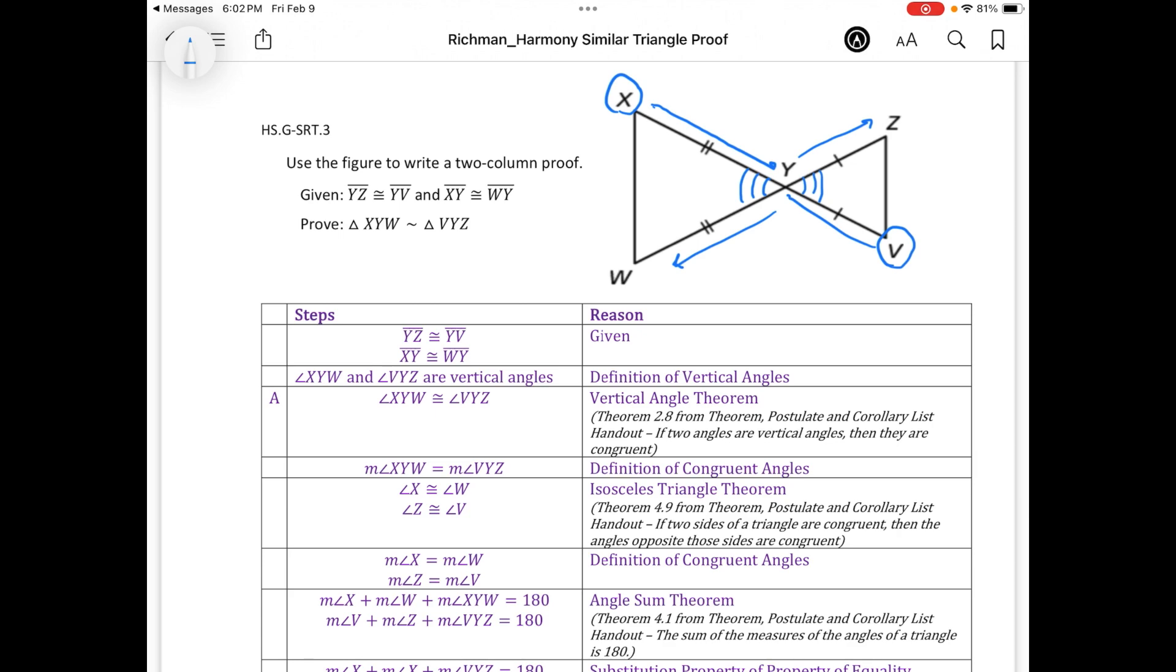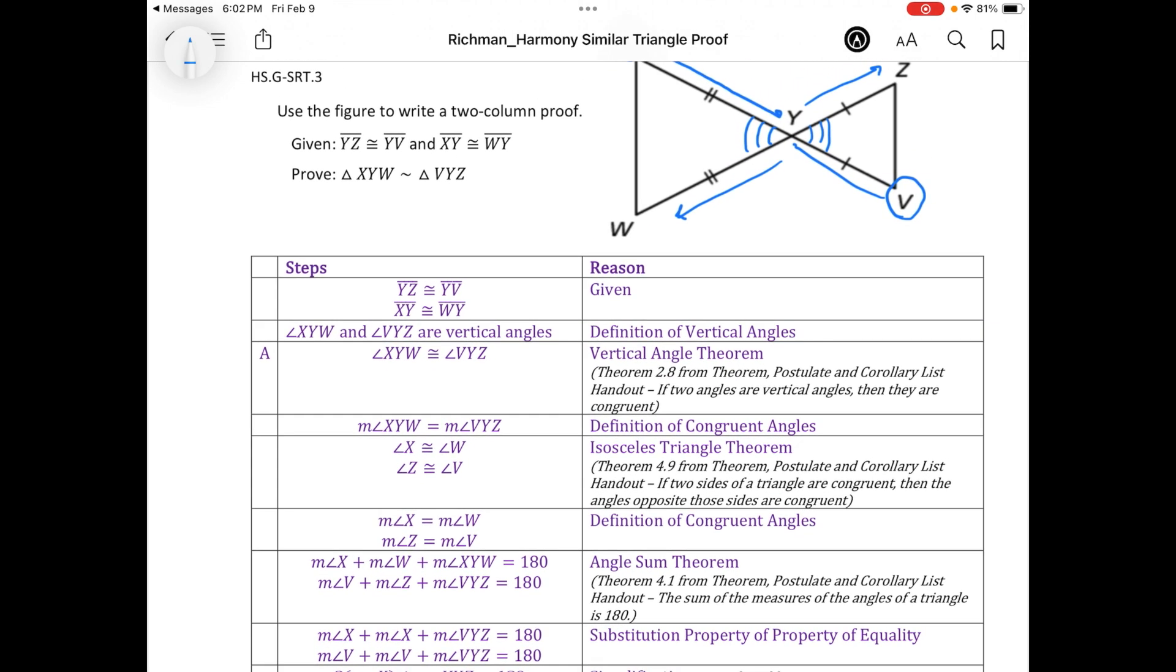So the measures were equal because we know that we have two congruent sides with each triangle. I knew that we had two isosceles triangles.